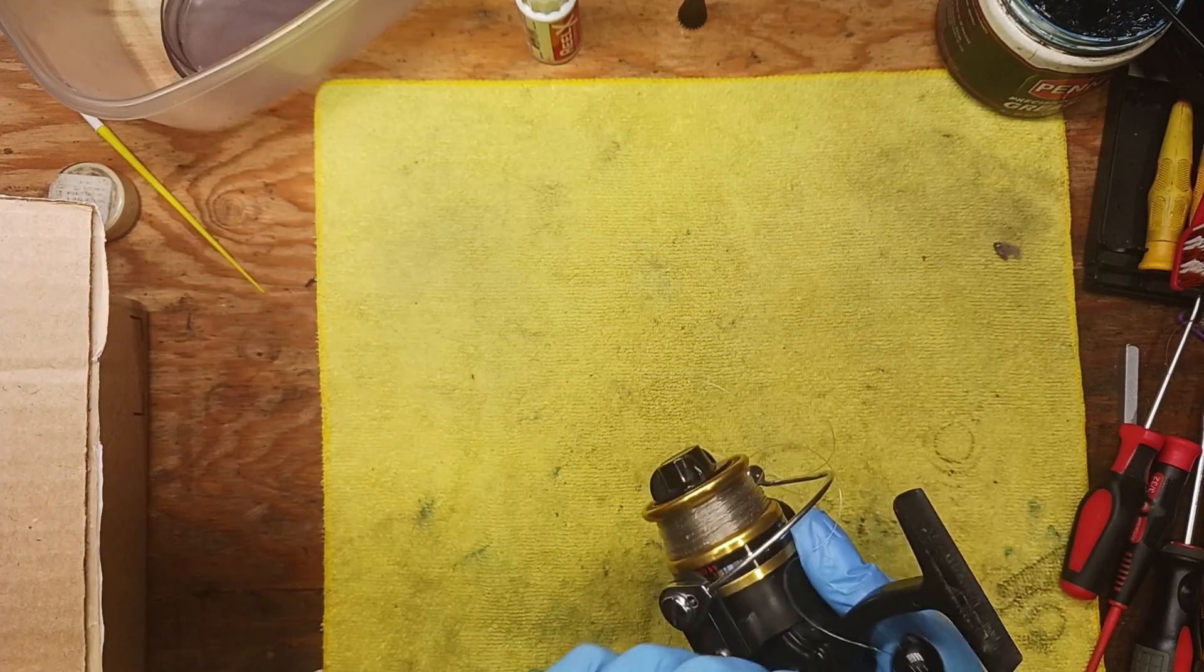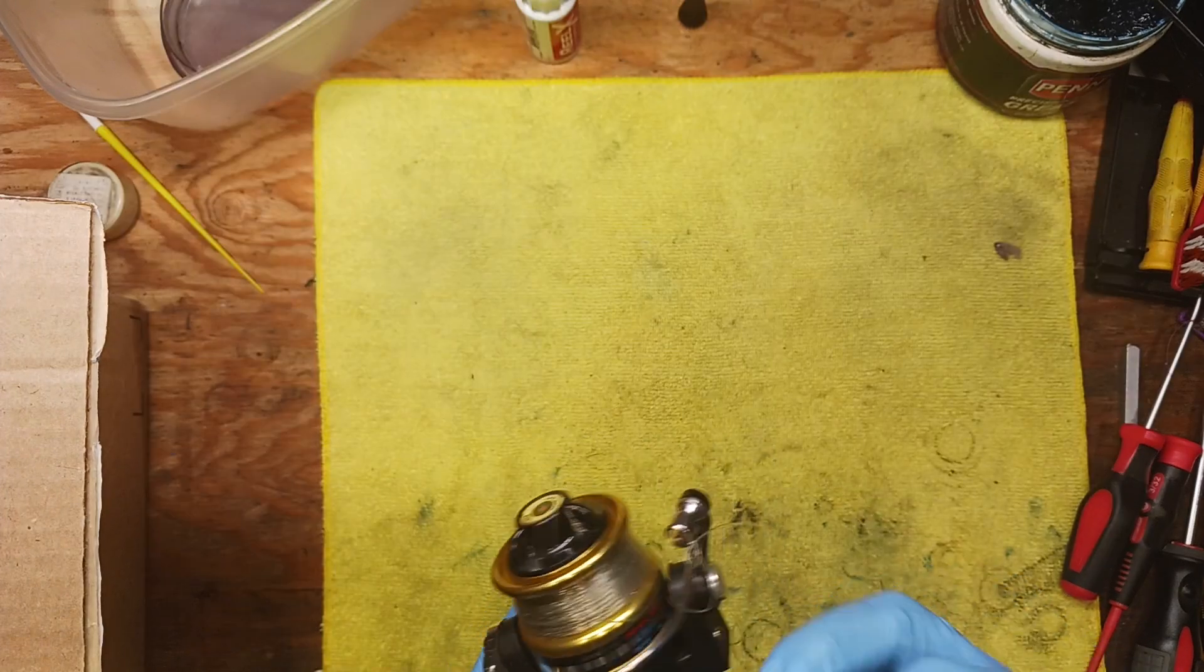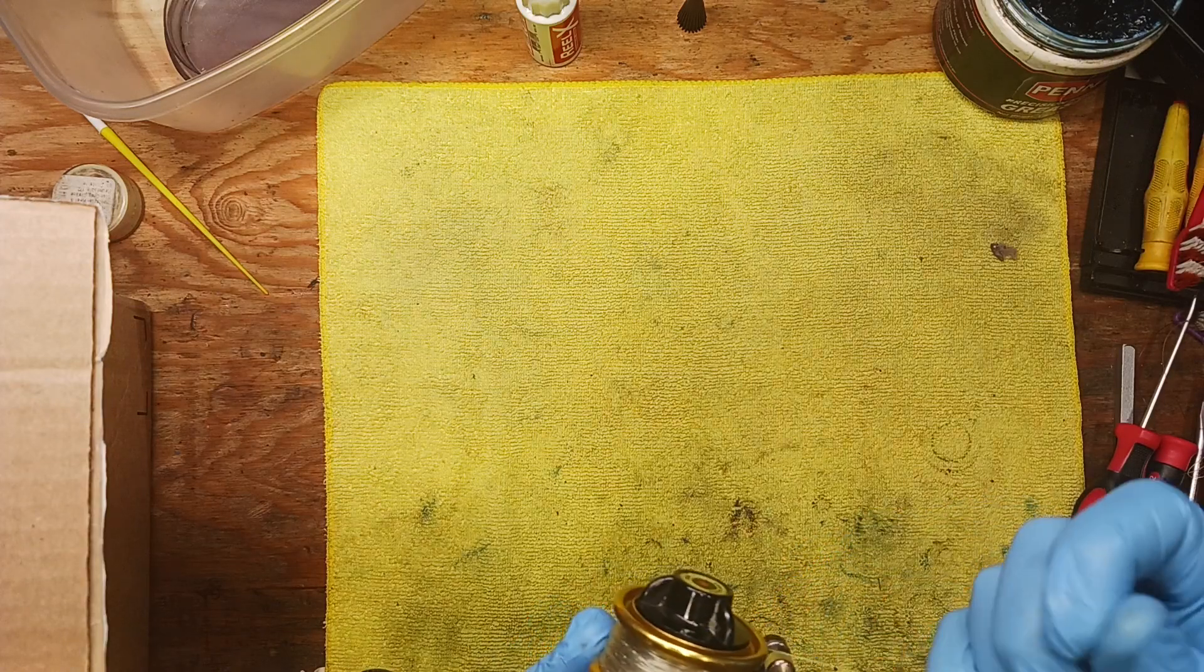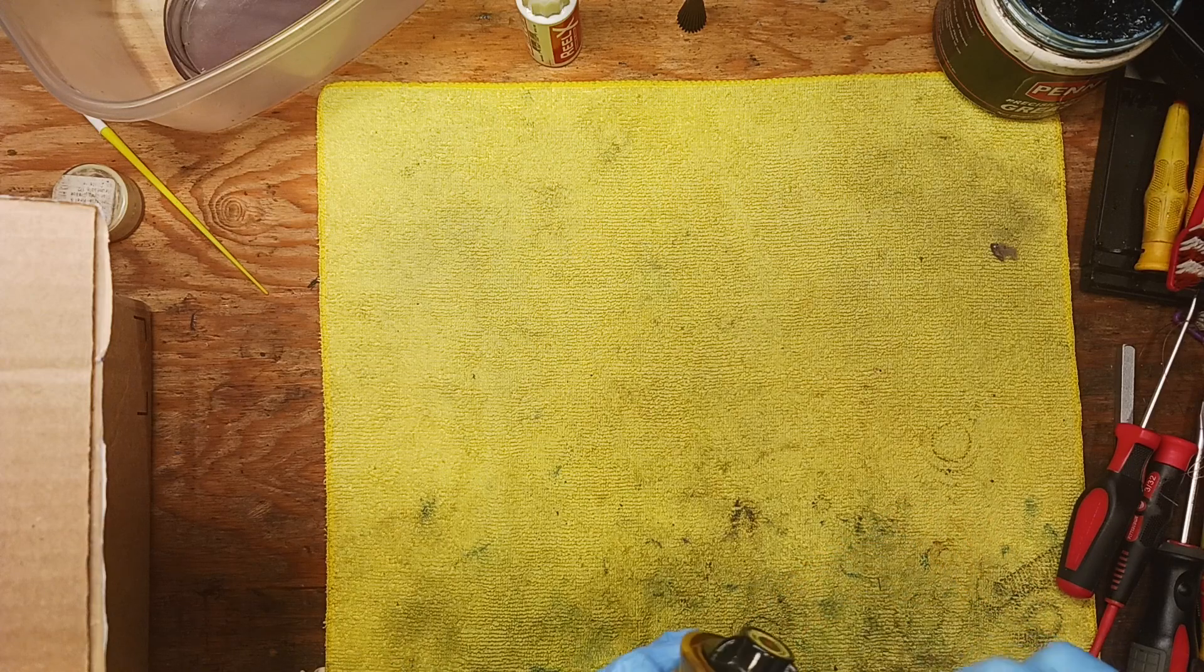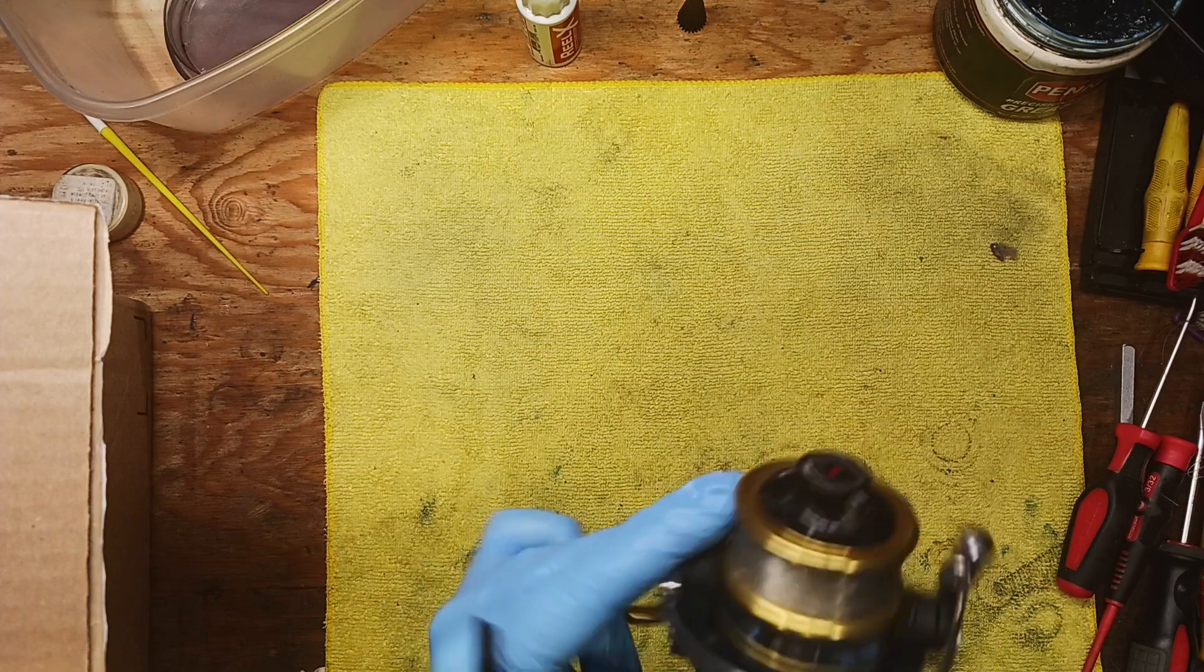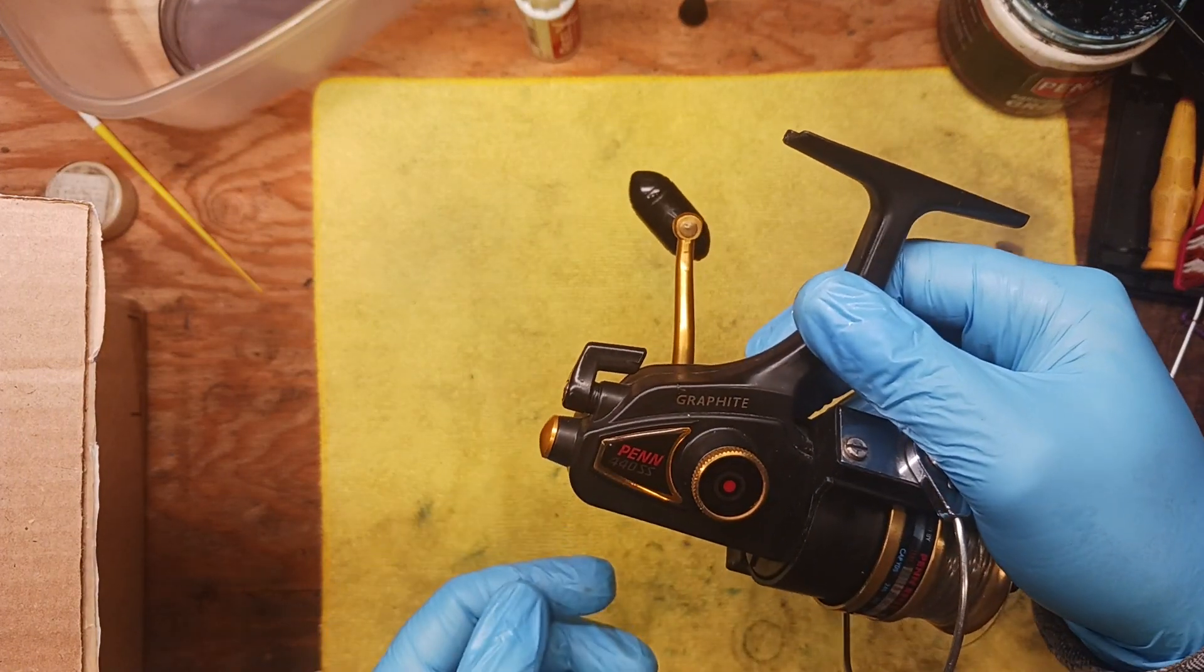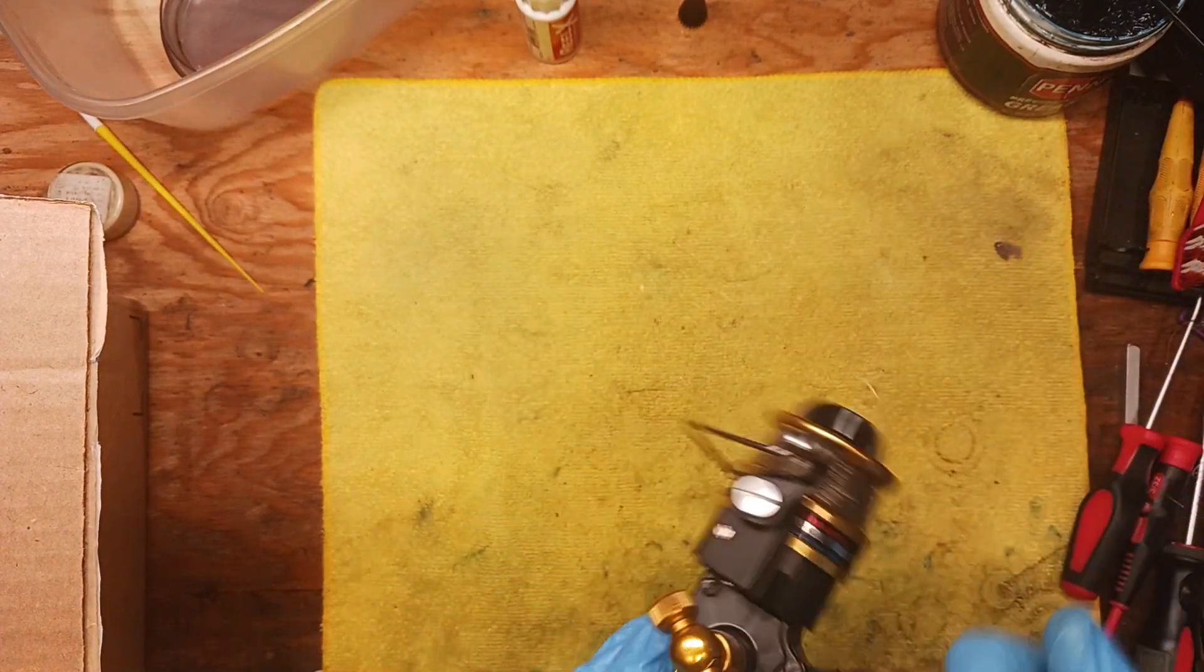Then we start getting into some higher quality equipment. We're looking at a couple of Penns next here on the deck. We got some line tangled up here. These are old school so they don't have those little tabs to put the line on. Like I said, we're going to take this line off. We're looking at a Penn High Speed 440 SS here. These are great reels.